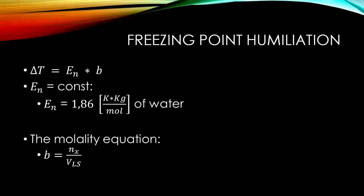The major equations used: The first one is the freezing point depression, which is ΔT equals Eₙ times b. The Eₙ is a constant term of the freezing point depression, which is 1.86 Kelvin times kg divided by mole for water in this assignment.